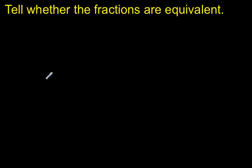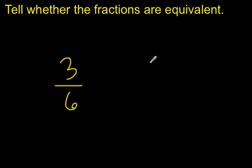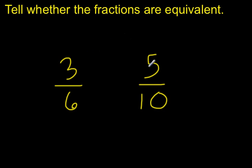Now we can use simplest form to determine whether fractions are equivalent. Let's try 3 sixths and 5 tenths. This is important because 3 and 5 do not have a clear whole-number multiplication relationship, nor do 6 and 10. So using a multiplication relationship, there isn't a clear whole-number one, and we'd just be guessing. That's why using simplest form is a great strategy.